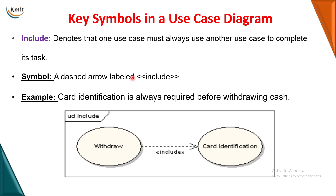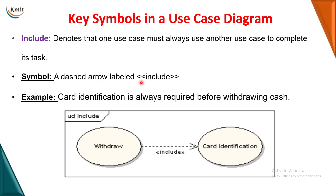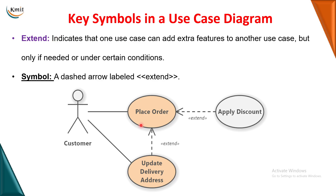To summarize relationships: actor to actor uses generalization; actor to use case uses association. Now, if you want to give a relationship between use case and use case, you can go for either include or extends. Include means one action is including another action. For example, withdrawing an amount includes card identification — you must insert a valid card before you can withdraw. In include, the arrow goes from the original use case to the included use case.